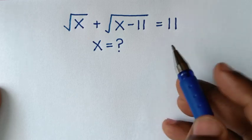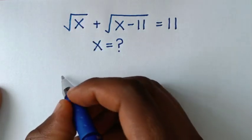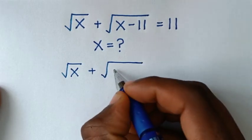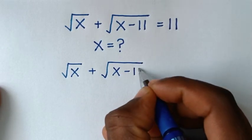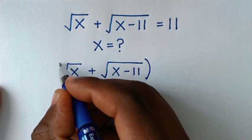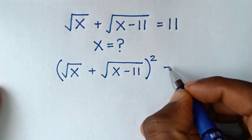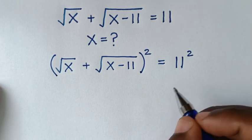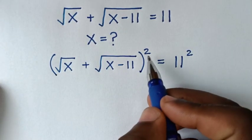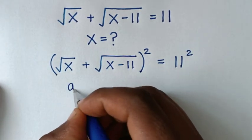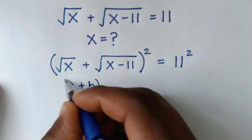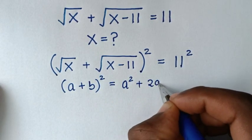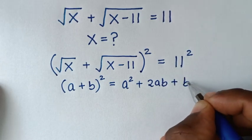In the first step, we start by squaring both sides. So from this side, which is square root of x plus square root of x minus 11, we'll square it, and on the right side we'll also square 11. In the next step, this is in the form of the algebraic rule: (a + b)² = a² + 2ab + b².